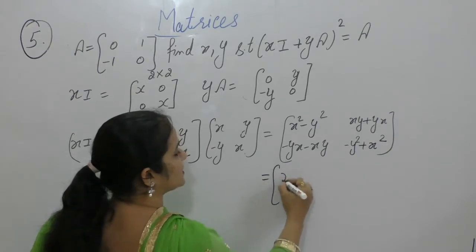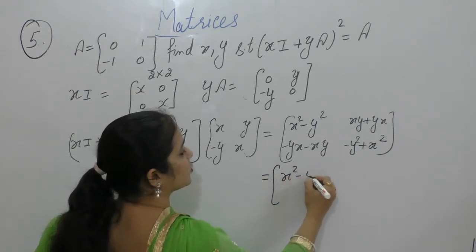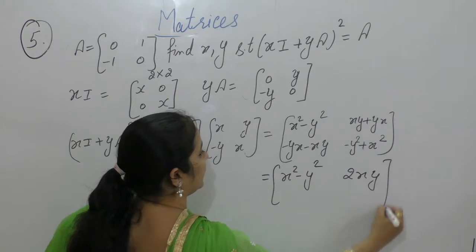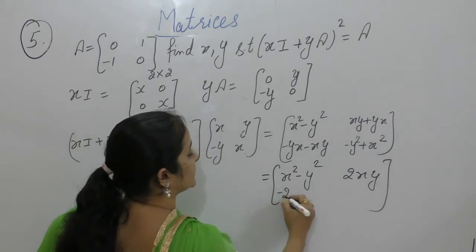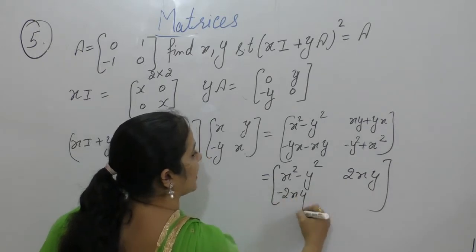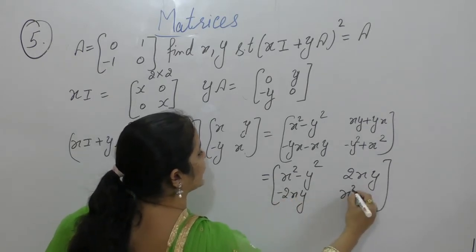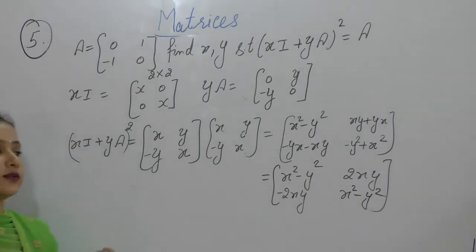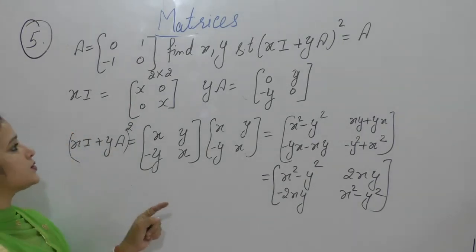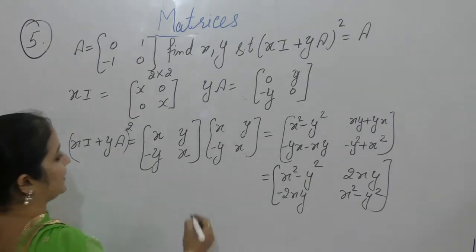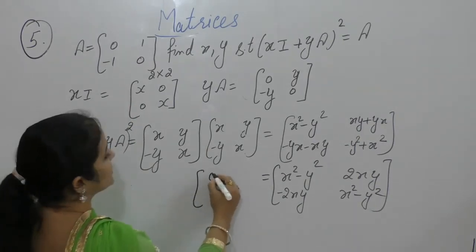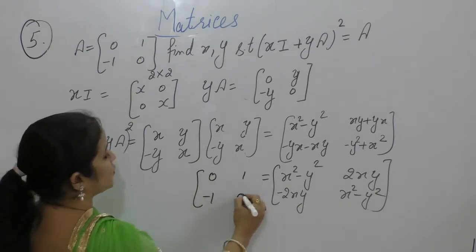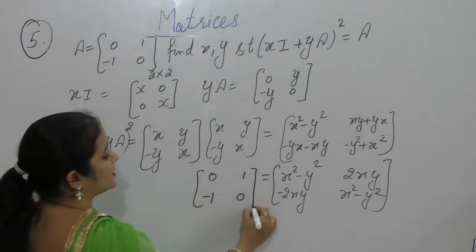The result of multiplying gives: x·x + y·(-y) = x² - y², then x·y + y·x = 2xy, then -y·x + x·(-y) = -2xy, and -y·(-y) + x·x = x² - y². So (xI + yA)² equals [[x² - y², 2xy], [-2xy, x² - y²]]. Now this must equal the A matrix, which is [[0, 1], [-1, 0]].